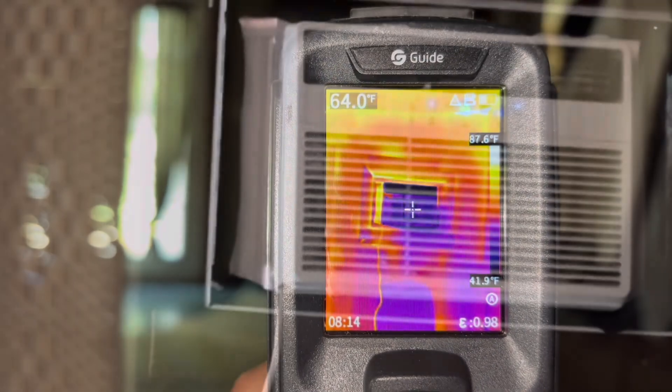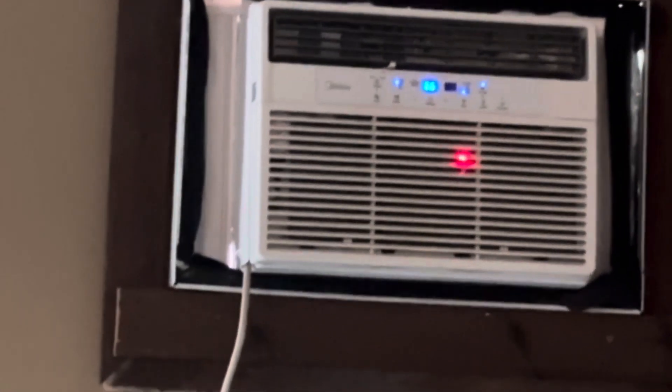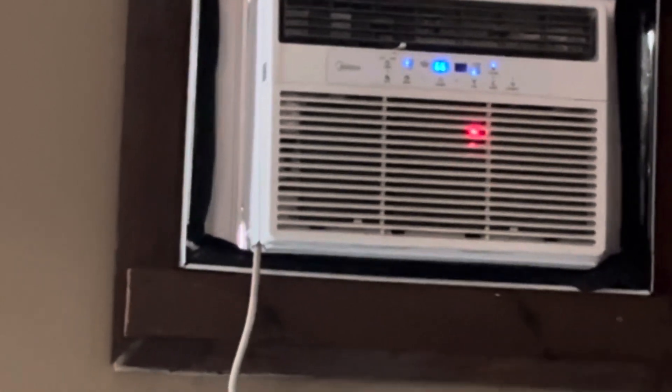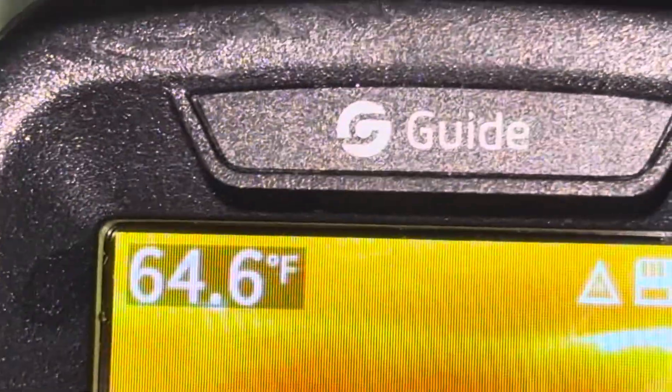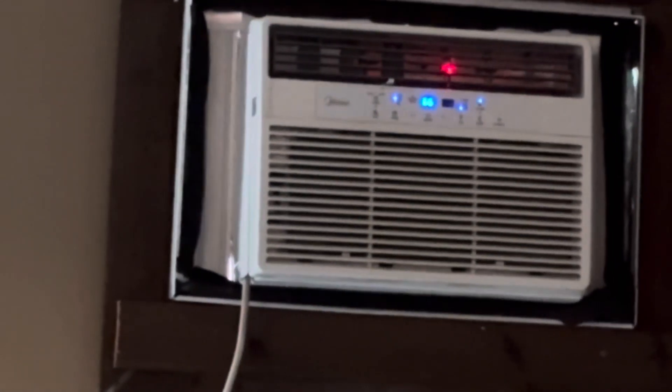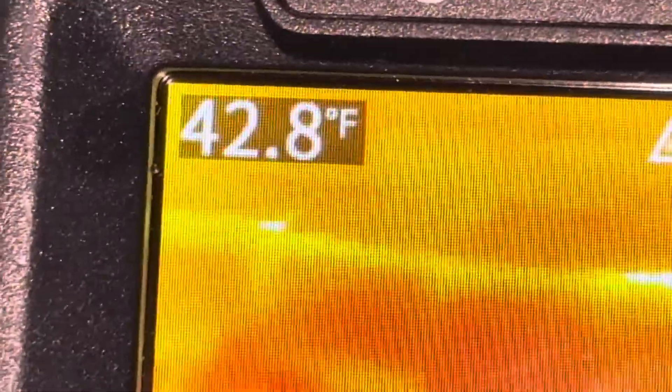The other trigger actually has two functions, but if you have the laser turned on, it turns on the laser and you can see we're picking up 64 degrees from that return of this air conditioner. If we move it up to the supply of the air conditioner, it's giving us 44, 42 degrees.